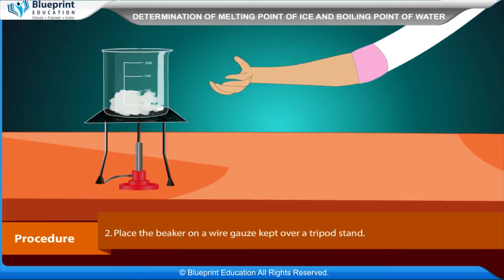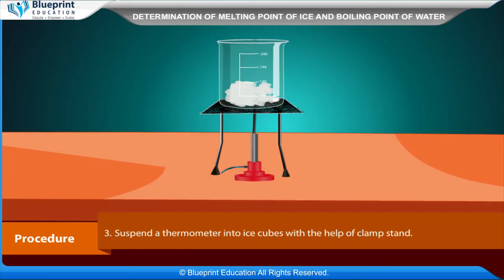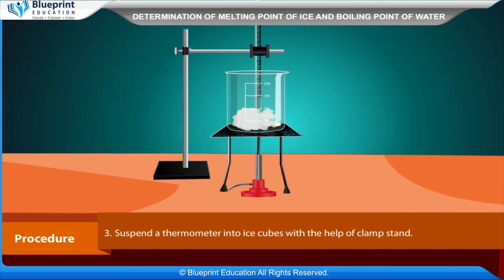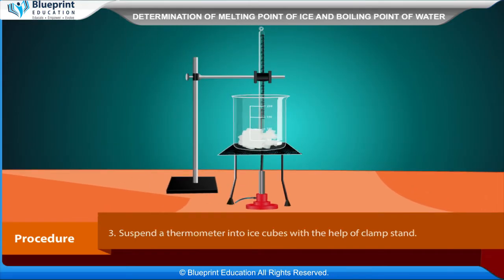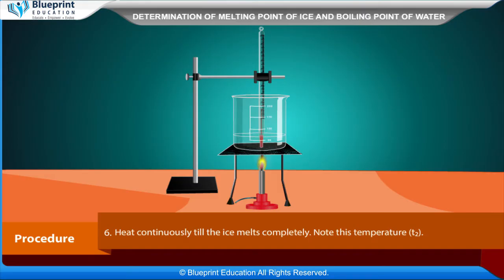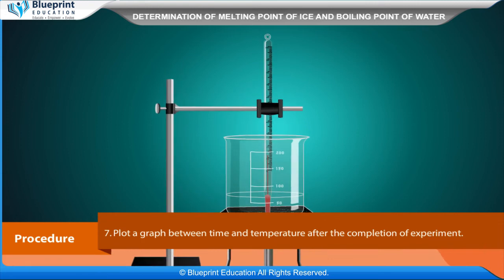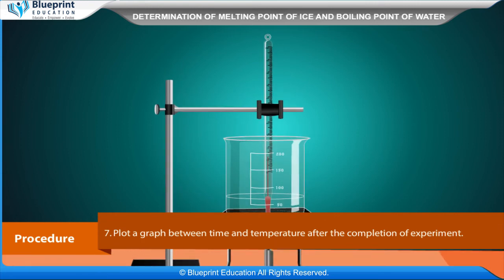Procedure: Take a beaker and fill it up to half with ice cubes formed from distilled water. Place the beaker on a wire gauze kept over a tripod stand. Suspend the thermometer into the ice cubes with the help of a clamp stand. Heat the ice cubes and stir for uniform heating. Note the temperature when the ice starts melting as T1. Heat continuously till the ice melts completely and note this temperature as T2.